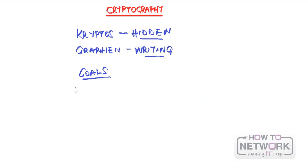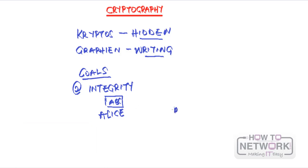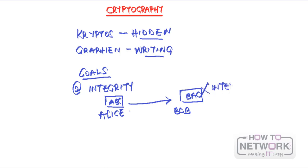The second goal is integrity. Integrity just means that the message is not altered once in transit. So once Alice tries to get the message over to Bob, the message should not arrive as B, A, C when it was originally A, B, C. If it reads as B, A, C, then integrity has been compromised.